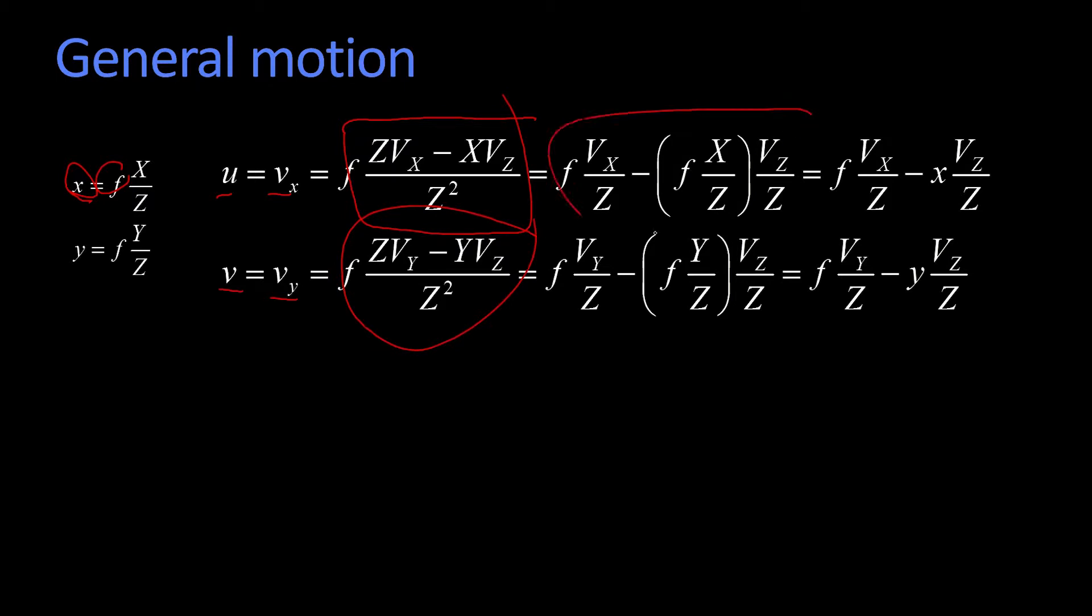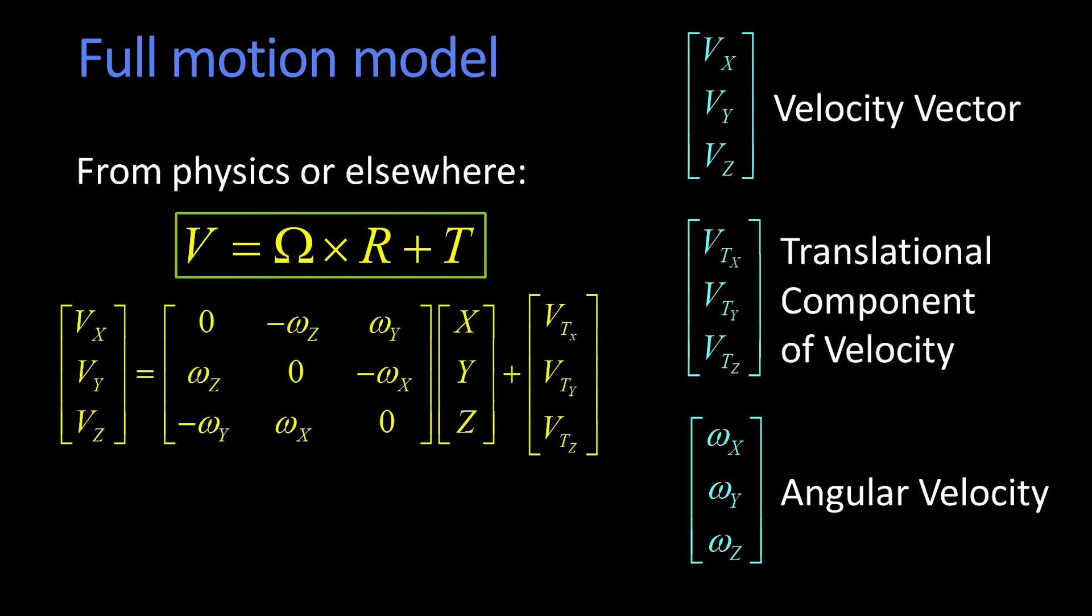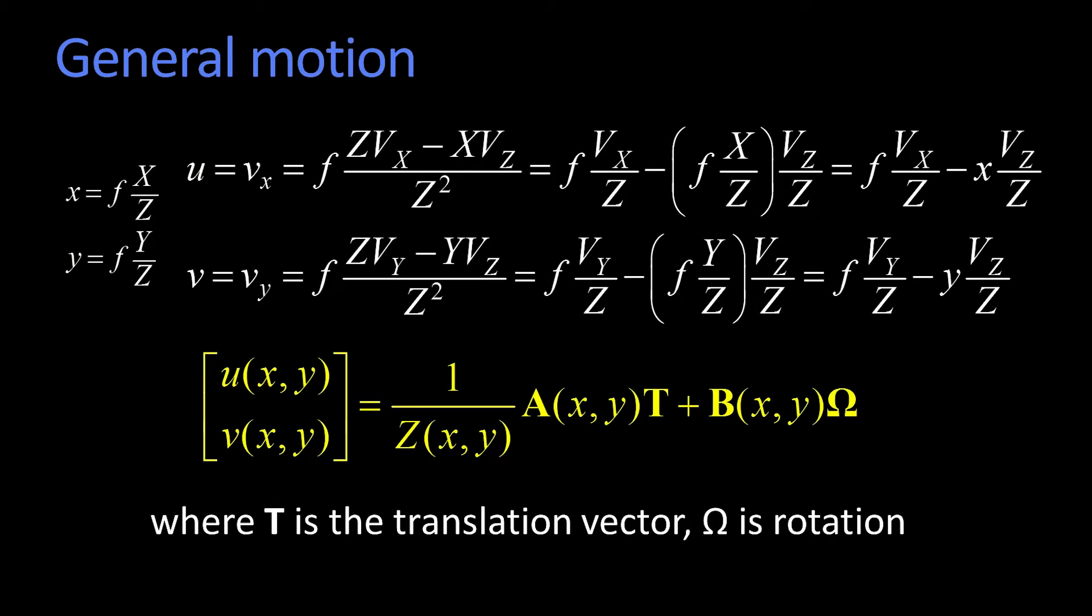Then we start to expand this stuff, and we get this nice little formula here. When you look at it, that's still kind of ugly because you don't actually know what vx, vz, and vy are. Well, it turns out you can write them pretty beautifully, for some twisted definition of beauty.